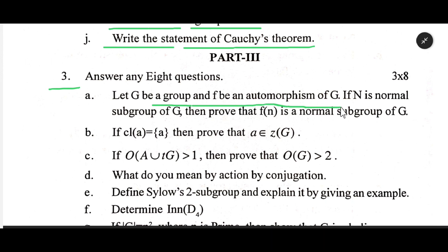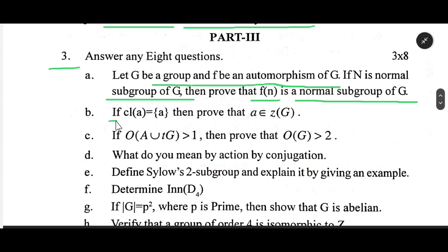Number 3: Let G be a group and f be an automorphism of G. If N is a normal subgroup of G, then prove that f(N) is a normal subgroup of G. If cl(a) = {a} then prove that a ∈ Z(G).